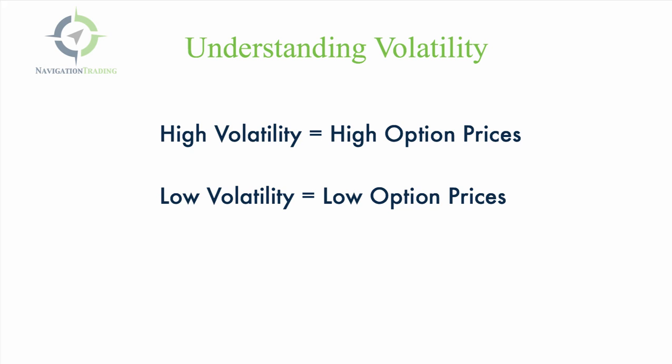As an option seller, if you're selling options or selling spreads like iron condors, strangles, or straddles, we want volatility to be high because we want to sell those options when they're at the highest price possible. Our positions are going to profit when we get a contraction in volatility. Sell it high, wait for that volatility to contract, take the position off for a profit.